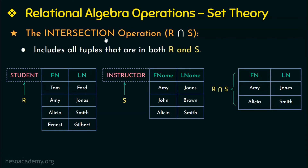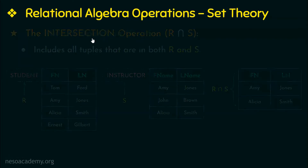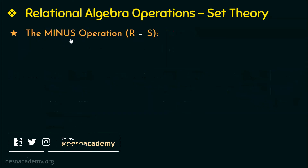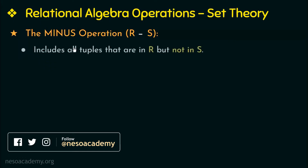The next standard set operation is the minus operation or the set difference operation, denoted as R minus S. R minus S gives a result that is a relation including all the tuples that are in R but not in S.